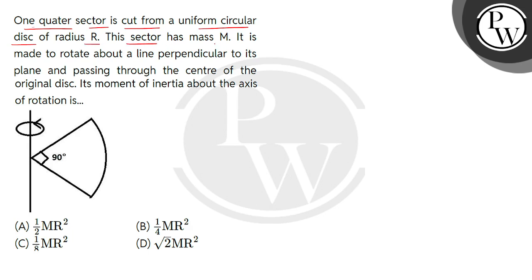This sector has mass M. It is made to rotate about a line perpendicular to its plane and passing through the center of the original disc. Its moment of inertia about the axis of rotation is.